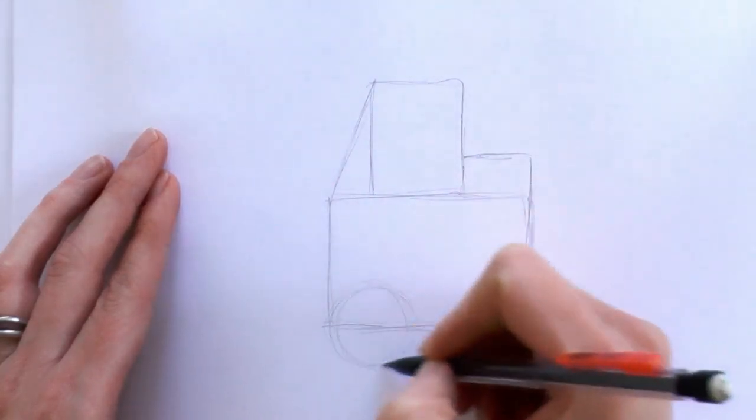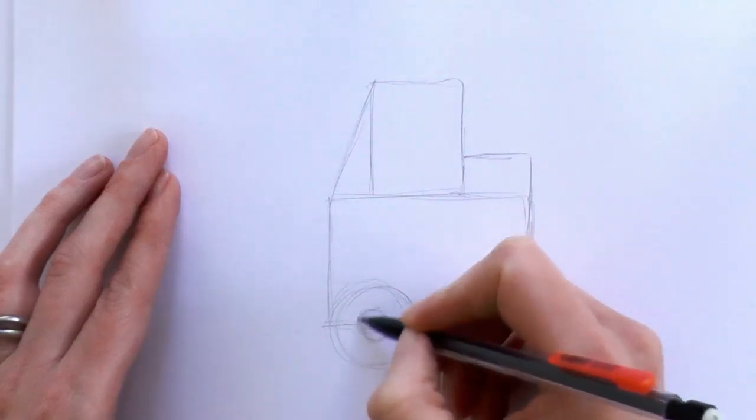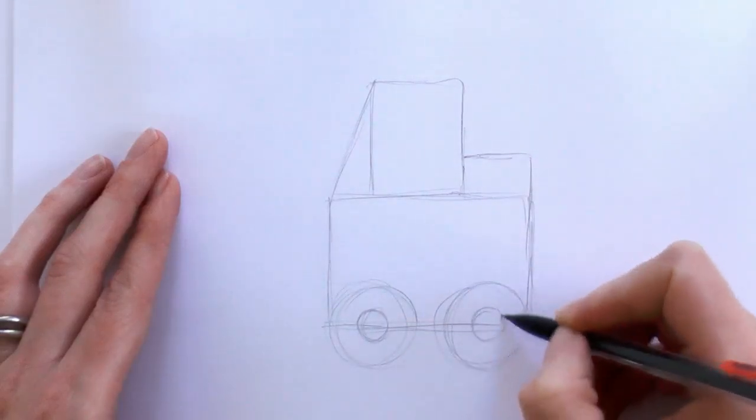Then a circle there and then another circle beside that. And then another circle inside, a smaller one. And then a smaller circle there as well.